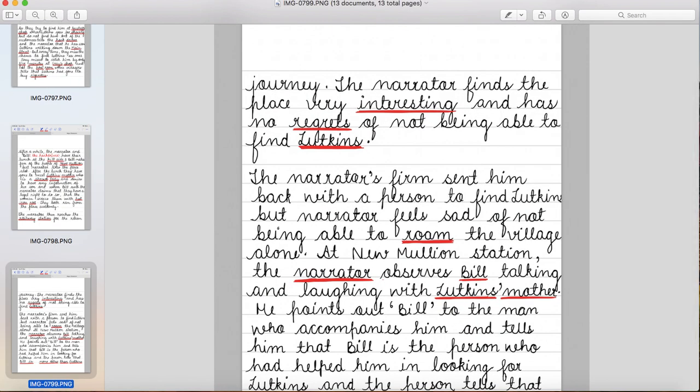The narrator finds the place very interesting and has no regrets of not being able to find Lutkins. Narrator ko woh jagah bohot pasand aati hai par usko koi regret nahin hota ki woh Lutkins ko find nahin kar paaya. The narrator's firm sent him back with a person to find Lutkins but narrator feels sad of not being able to roam the village alone. Narrator ki law firm woh unko wapas bhejti hai Lutkins ko find karne ke liye lekin is baar ek aadmi bhi saath mein bhejti hai jo ki Lutkins ko jaanta hai.